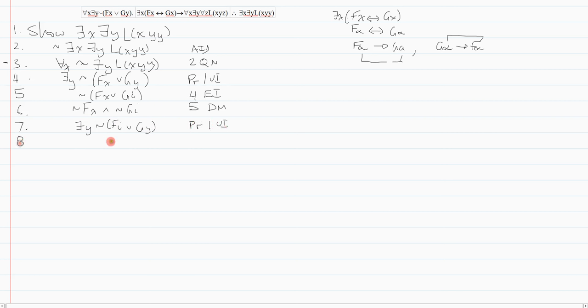Now, of course, I don't have a choice. I must EI this. And that's going to go to some new variable, J. And that's seven EI. And I can DeMorgan's this. And I get not FI and not GJ. And that's eight DeMorgan's.